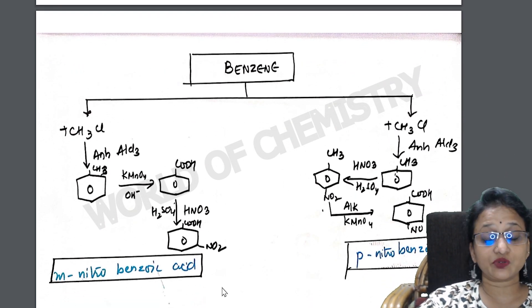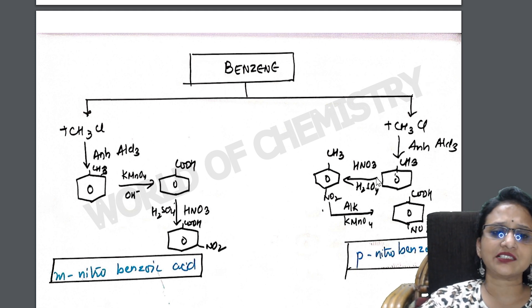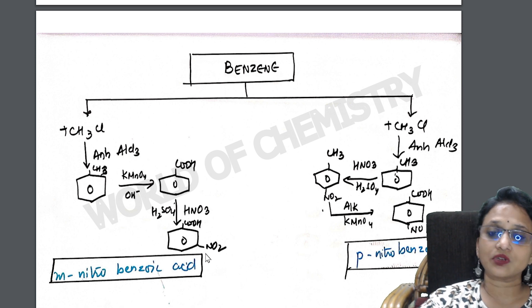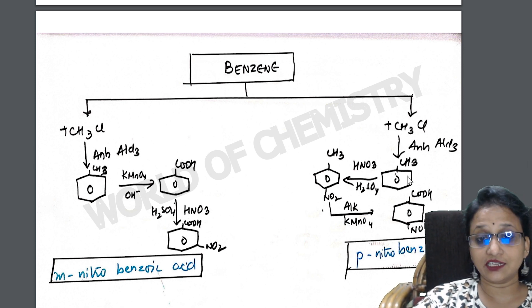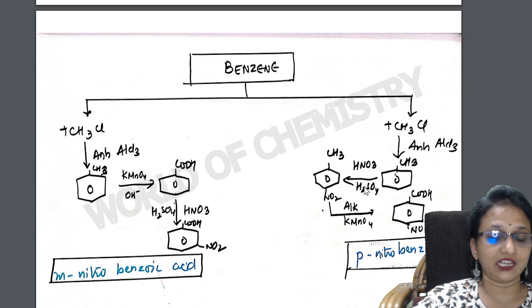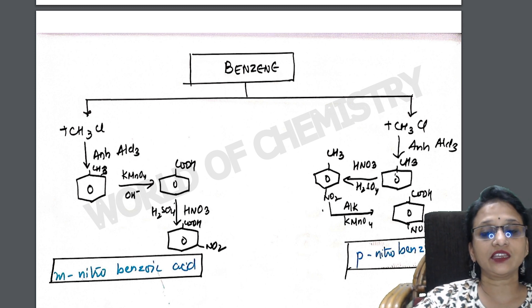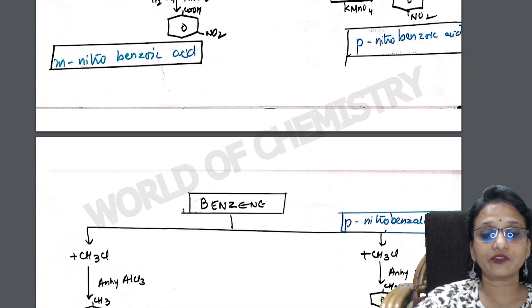Benzene to metanitrobenzoic acid and benzene to paranitrobenzoic acid: both use alkylation first, then oxidation to get benzoic acid. After getting benzoic acid, do nitration to get metanitro. For para: introduce the nitro electrophile (NO2+) at the para position first on toluene, then do oxidation to get paranitrobenzoic acid.